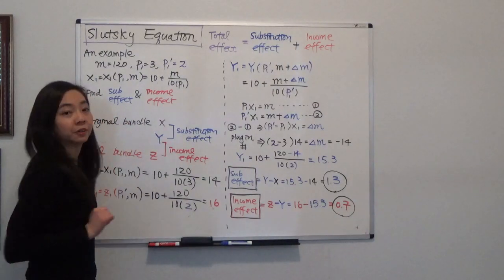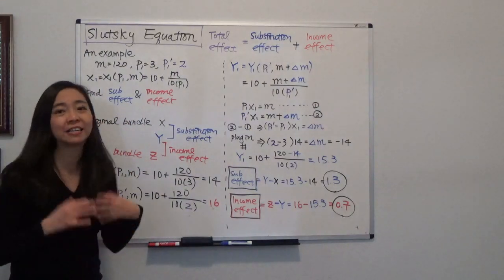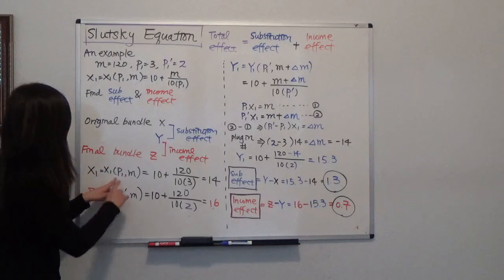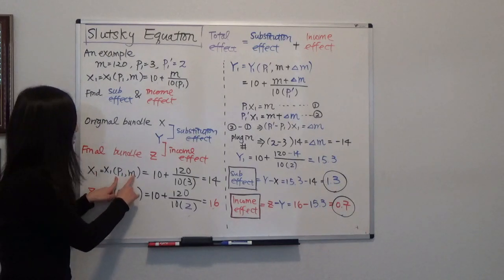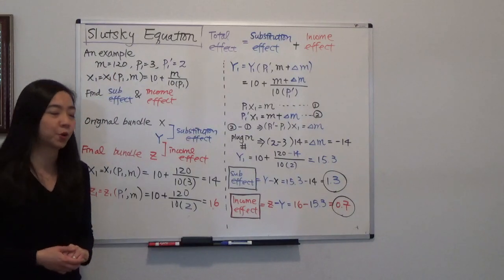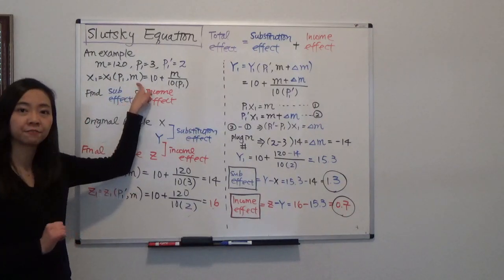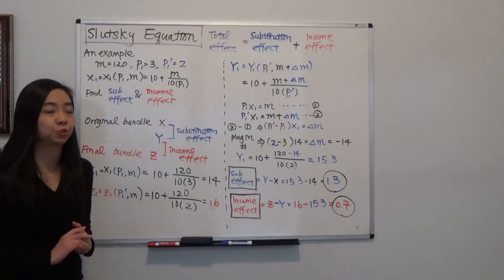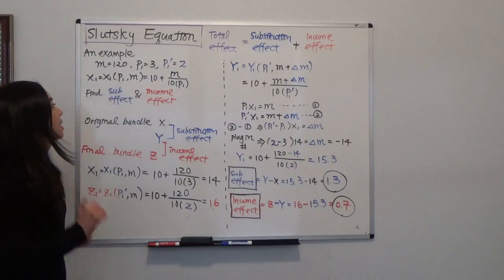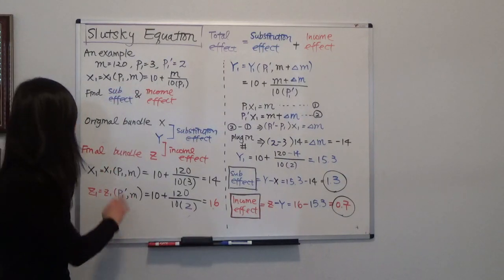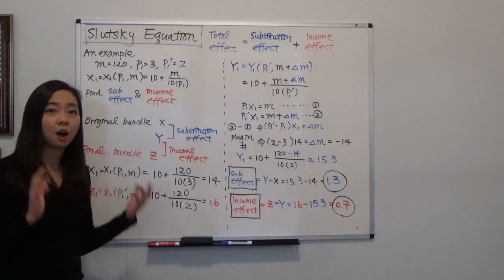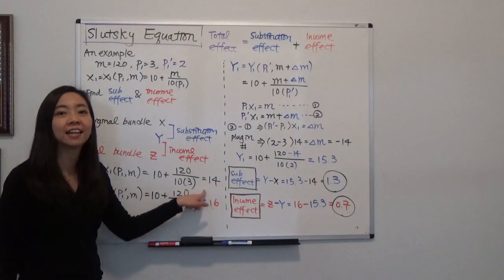Typically, the original bundle and the final bundle are easier to find. Our original bundle is a function of the original price and our budget. The price is $3 and the budget is $120, and we are given the demand function. We just plug in P1 = $3 and budget = $120, and we find that our original bundle X is equal to 14 gallons of milk.